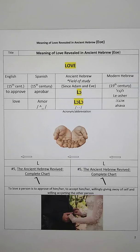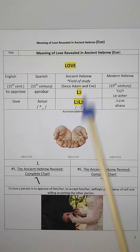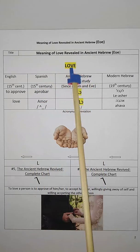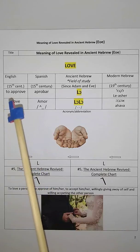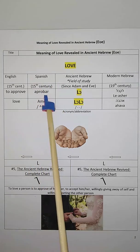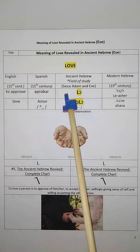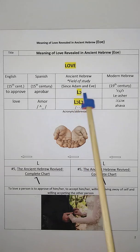Today our topic is about love — the meaning of love revealed in ancient Hebrew, the Ebe. So the word love in the ancient Hebrew is closely related to the word 'approve,' to approve of a person. How do you say to approve in Spanish? It is 'aprobar.' And how do you say to approve in modern Hebrew? It is 'le asher.' And how do you say to approve in the ancient Hebrew, in the Ebe? It is 'lo.' It literally means a hand.